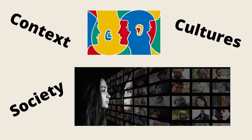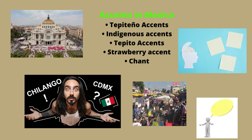In Mexico there are several cultures and therefore there are different ways of speaking. The same is true at the global level, especially in countries where English is spoken such as the United States and England. Within Mexico, examples include Tepiteño, Indigenous, Tepito, Strawberry, Champs, Costas, Northern and Chilango varieties.